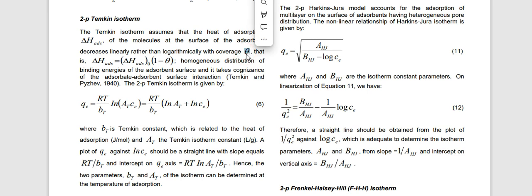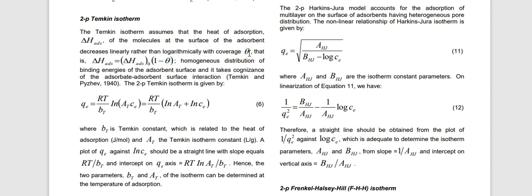The surface that is uncovered, or the surface where adsorption does not take place, is represented as one minus theta (1 − θ). So theta represents the portion of the surface that is fully covered or fully interacting with adsorbate molecules, while one minus theta is defined as the uncovered surface where adsorption does not take place.